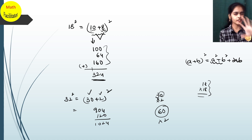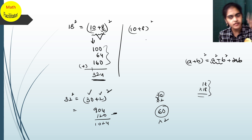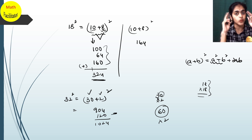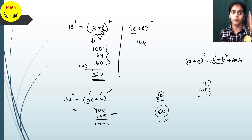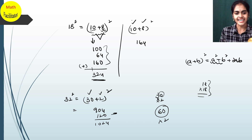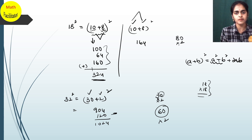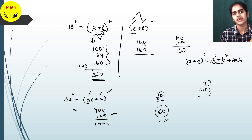Let me redo 18² with this method. 18² = (10 + 8)², done mentally: 10² = 100, 8² = 64, so 100 + 64 = 164. Addition is easy, and doing this mental calculation increases your brain concentration levels. Now 10 × 8 = 80, double of 80 is 160. Add 160 to 164 and you get 324.